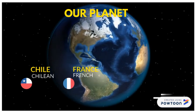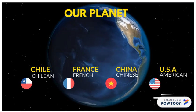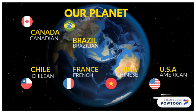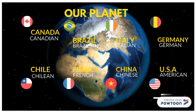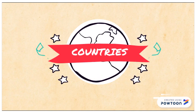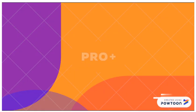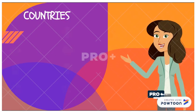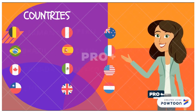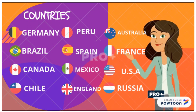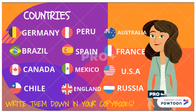Here on our planet you have some examples of countries and nationalities. Can you imagine how many countries we can find? Let's start with some of them. Please check this list: Germany, Peru, Australia, Brazil, Spain, France, Canada, Mexico, USA, Chile, England, and Russia.